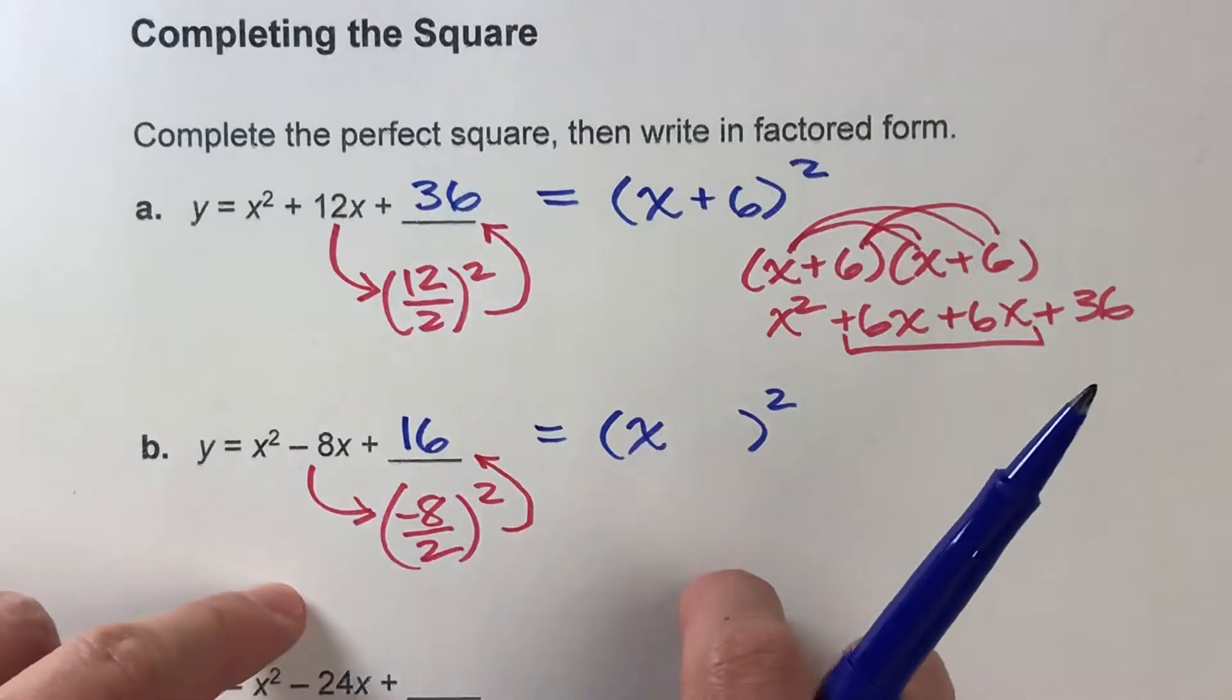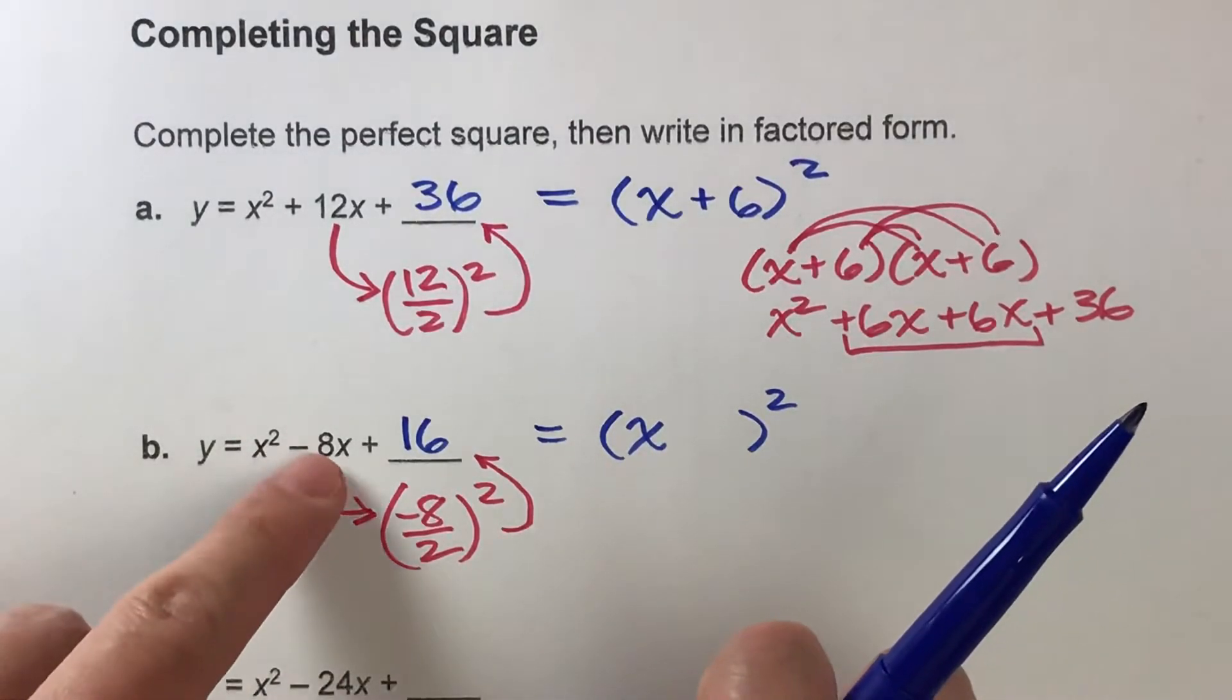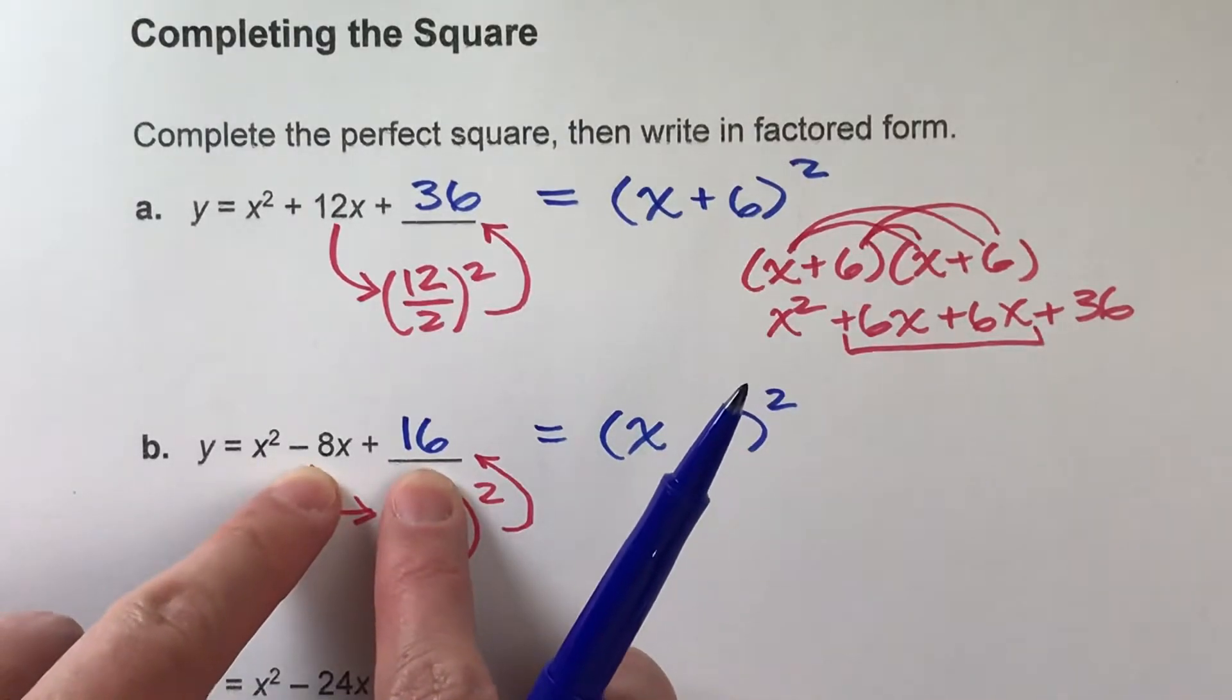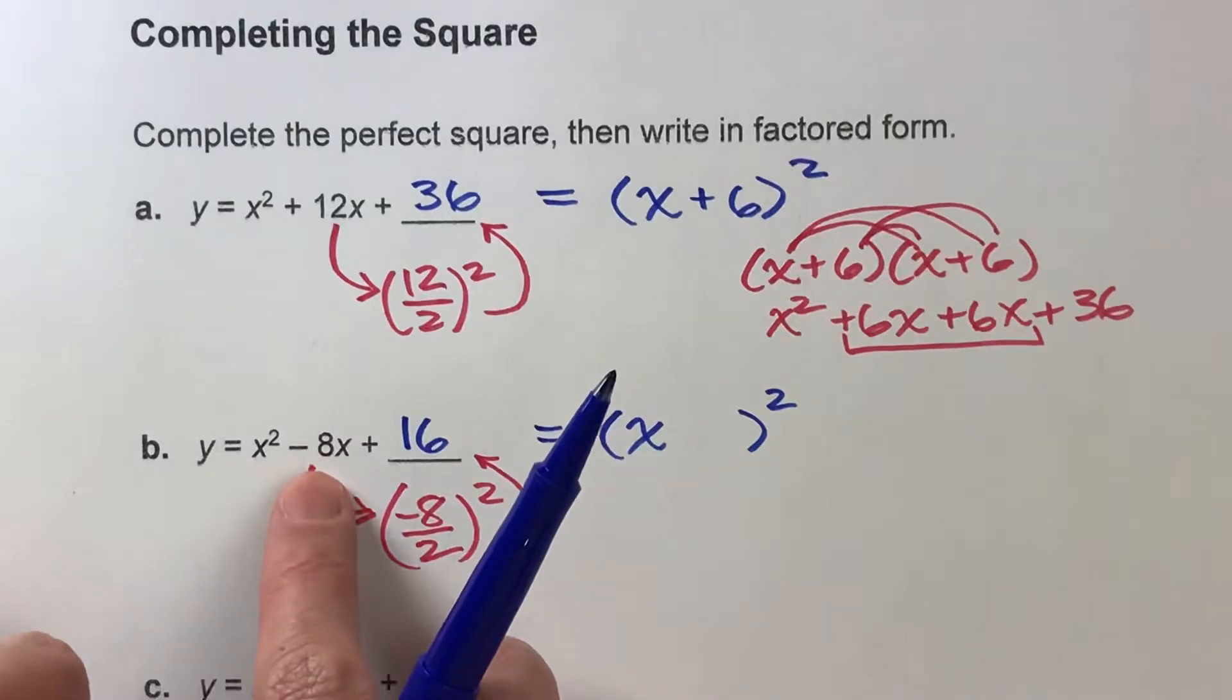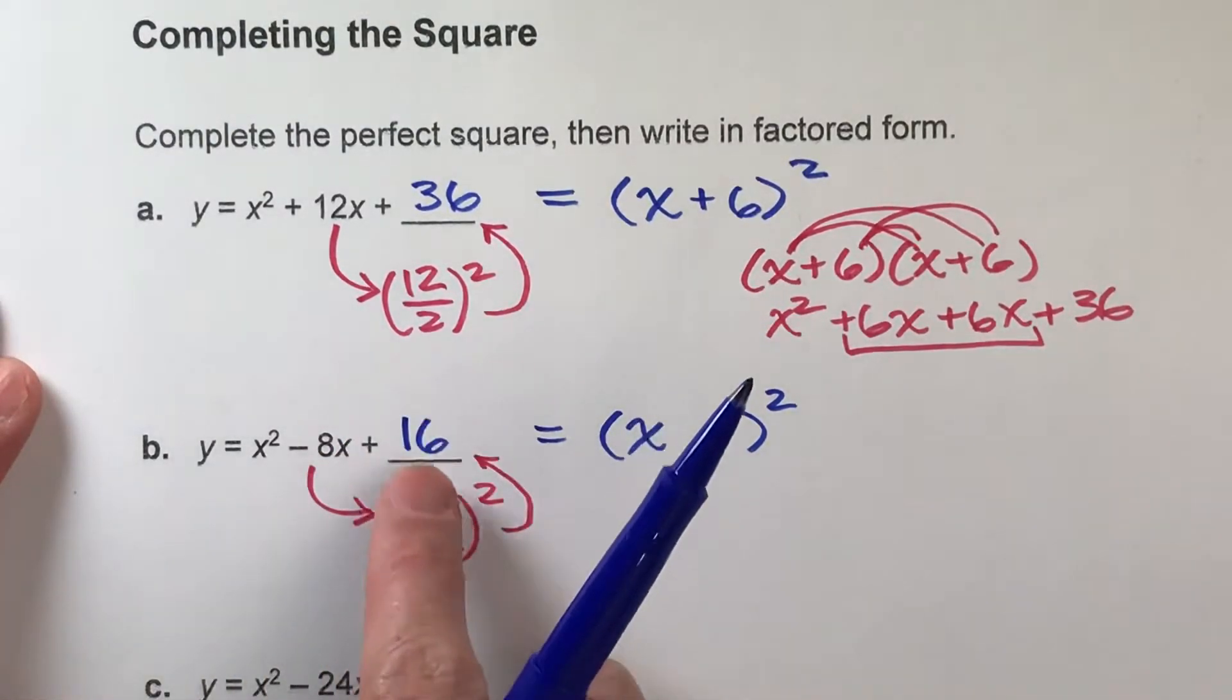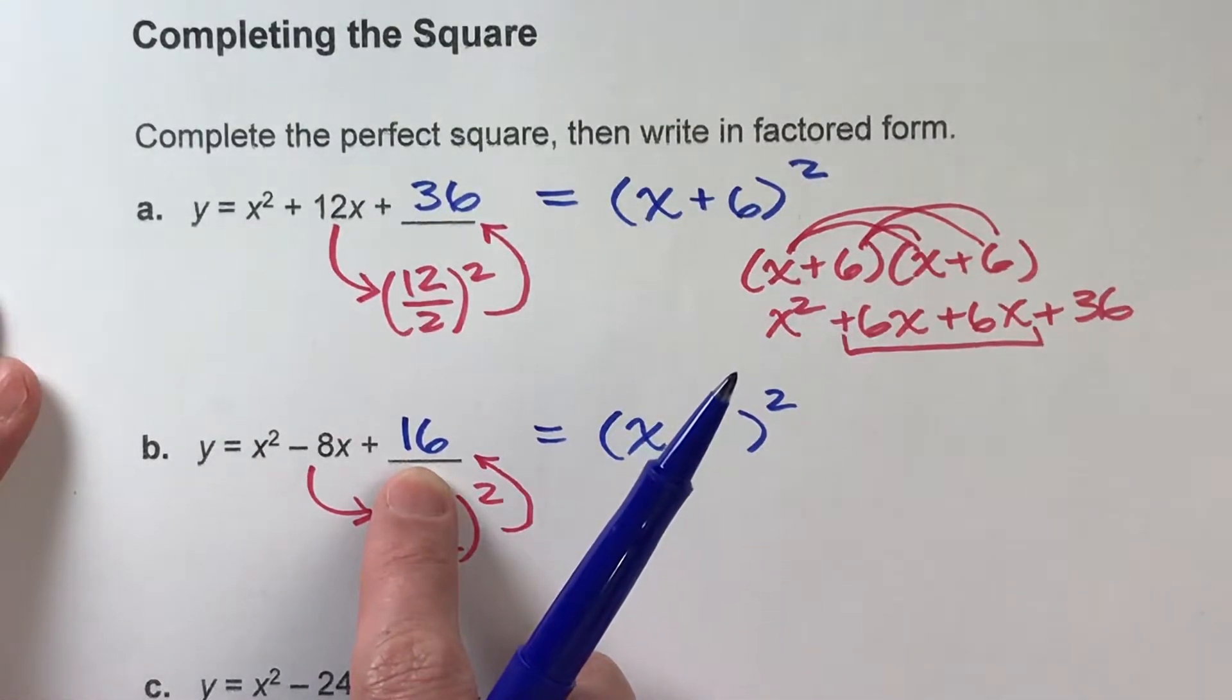Now, like I told you before, there's two ways to find that. We can take this number and divide it by 2, or take this number and square root it. You should get the same answer. But notice something interesting here. If we take negative 8 and divide it by 2, we get negative 4. The square root of 16 is positive 4. But wait a minute.